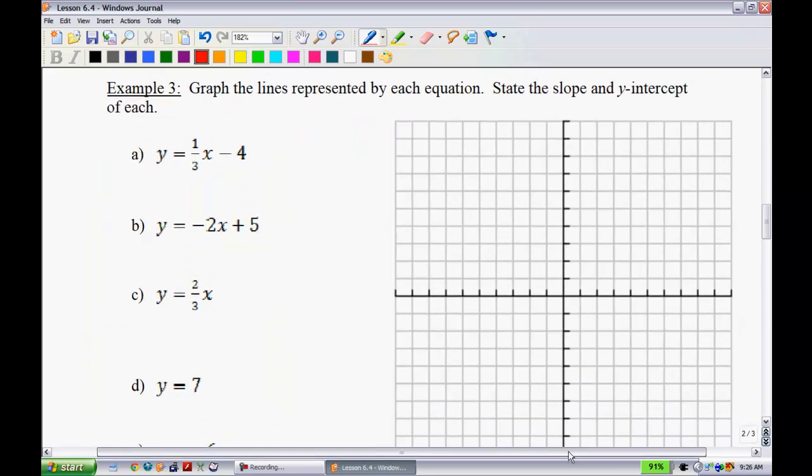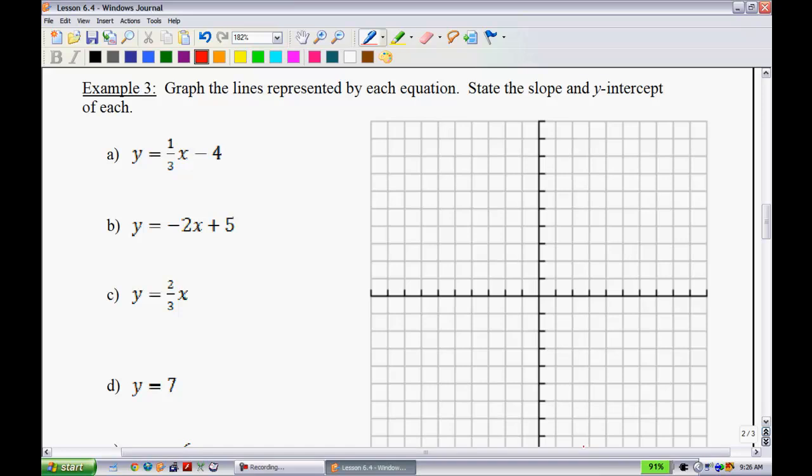Example 3 wants you to graph all of these different lines and state the slope and y-intercept as we do them. I'm going to try to do these in different colors. The first one I'll do in red. I'll identify my slope first, that's 1 third, and my y-intercept is negative 4. So I'll draw my dot at negative 4. And from here I just apply my slope. I go up 1 over 3. That should be enough points to give me a fairly accurate drawing of my graph.